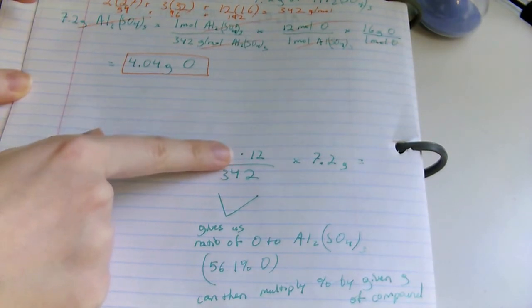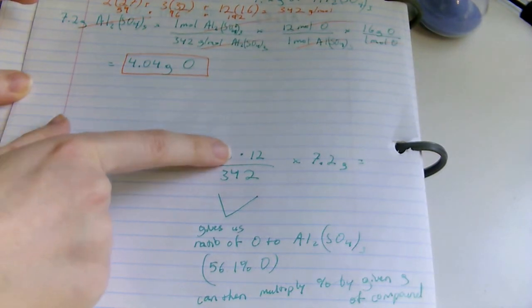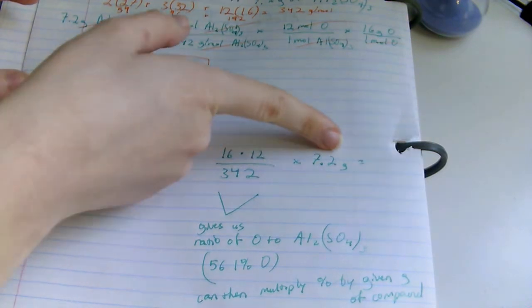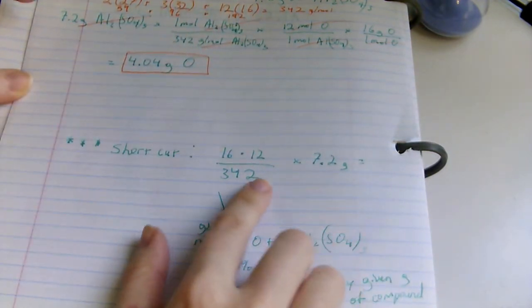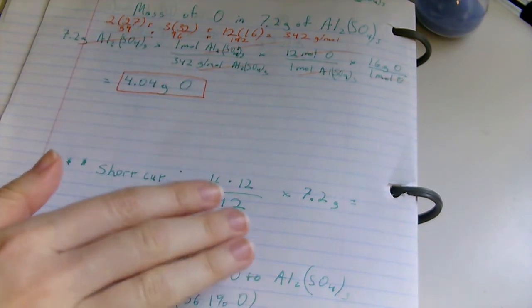This ratio right here gives us the ratio of oxygen to aluminum sulfate, which is a little over 56 percent of oxygen. We can then multiply the percentage that we got by the given mass of the compound. Working this out is basically the same steps that we did up here, except without the unit measurements.